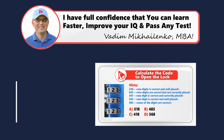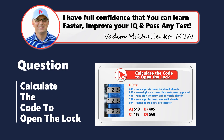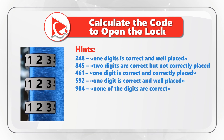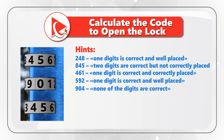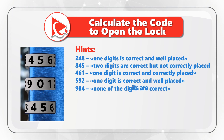Here is a challenging problem by solving which you will boost your cognitive abilities. You are presented with five hints, and using these hints, you need to unlock the code and open the lock. In the digits 248, only one digit is correct and well placed. In the digits 845, two digits are correct but not correctly placed. In the digits 461, only one digit is correct and correctly placed. In the digits 592, only one digit is correct and well placed. And in the digits 904, none of the digits are correct. You need to process all the hints and select one out of four possible choices.